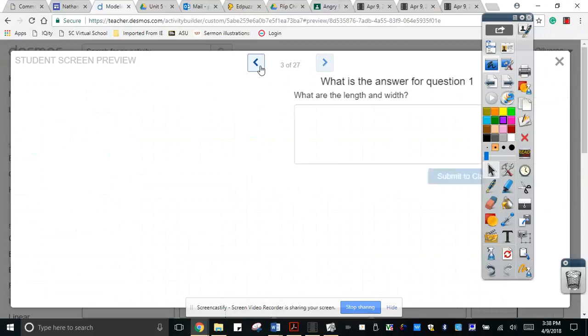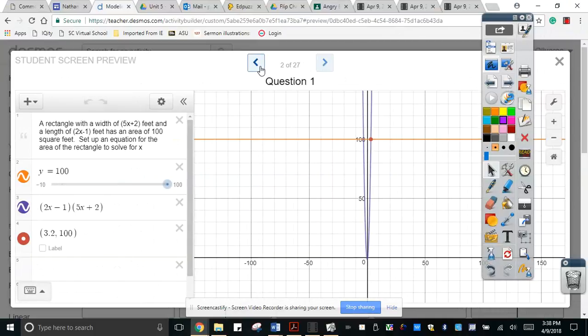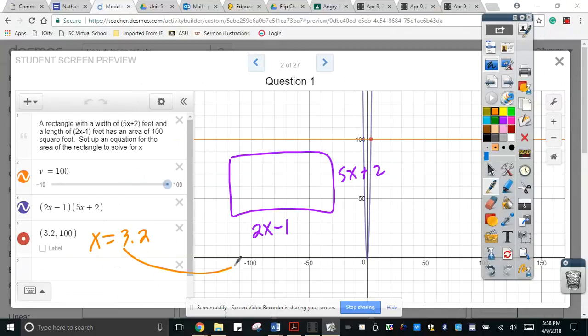What are the length and the width here? So going back, so since we know that the rectangle is like 2x minus 1 here and 5x plus 2. Since, according to our answer, the value of x is 3.2, we will plug in 3.2 right there and right there. That gives us 2 times 3.2 minus 1. And what's the answer using our calculator here? So 2 times 3.2 minus 1, that gives you 5.4 feet. Don't forget the unit. And this one here is 5 times 3.2 plus 2 will give me 18 feet.